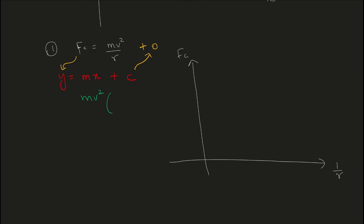You can see that mass multiplied by the square of speed (mv²) becomes the gradient, because those quantities are constant and are multiplied by the quantity plotted on the x-axis (1/r). So I get a straight-line graph with a positive gradient passing through (0, 0). The gradient equals mv², so if I find the gradient of the graph I can find one of the unknown quantities — mass or velocity — if the other is known.